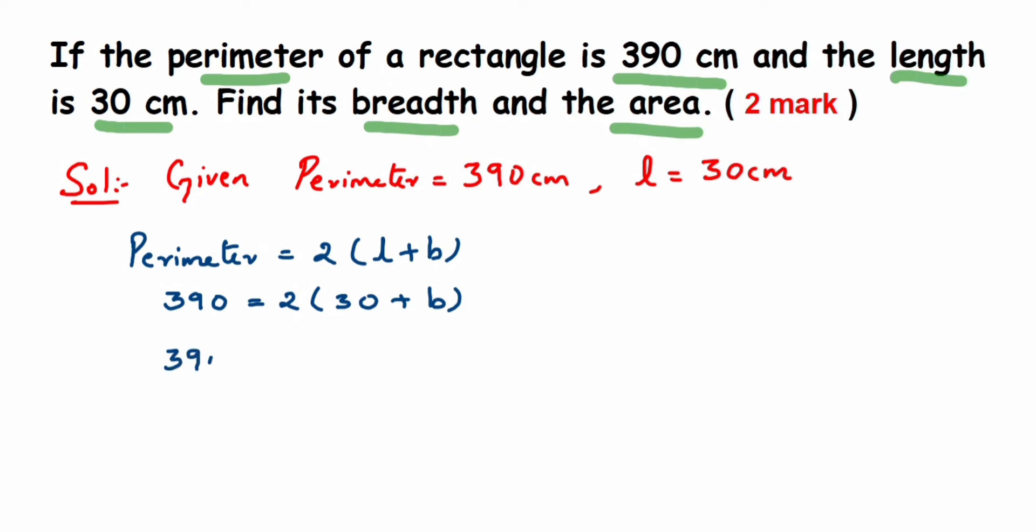You can cancel 2 and 390. It's 2 ones are 2, 1 is a remainder that makes 19. So 2 nines are 18, again 1 is left so it makes 10, then we'll get 5. So it's 195 we'll get, so 195 is equal to 30 plus B.